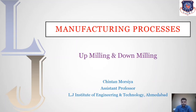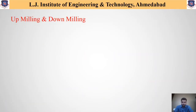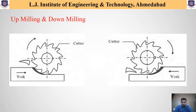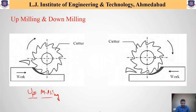Hello students. Today in this lecture we will discuss about up milling and down milling. As we have discussed in our previous lecture, there are different feeding systems available for how one can feed the workpiece and table. These are the main two methods: the first one is up milling and the second one is down milling. The first figure shown here indicates up milling, and the second figure shown here indicates down milling.